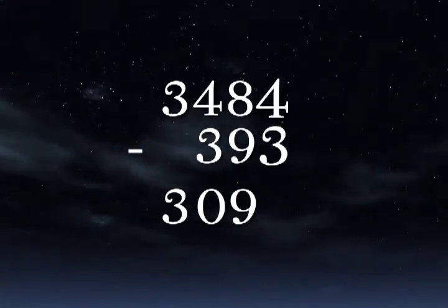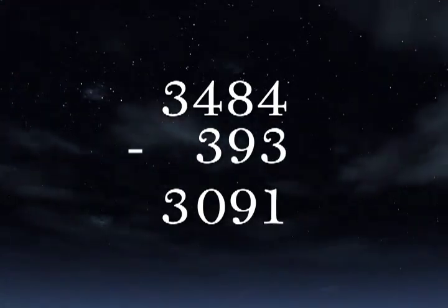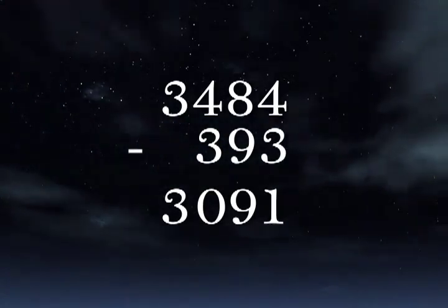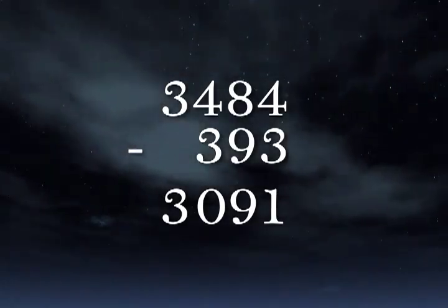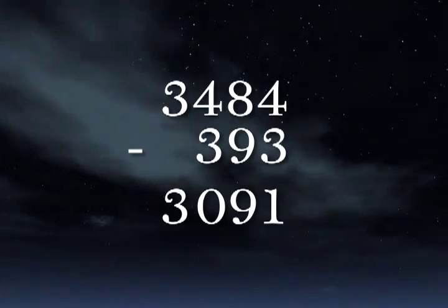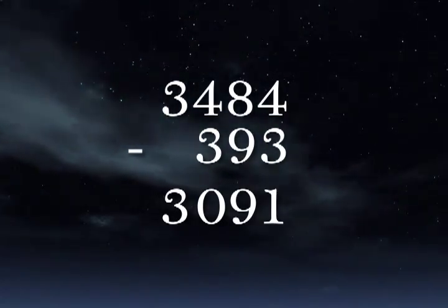And 4 minus 3 is 1. By regrouping the middle two columns, we didn't need to borrow. Borrowing is more mentally taxing, so always be looking out for chances to subtract by regrouping. It's easier and faster.